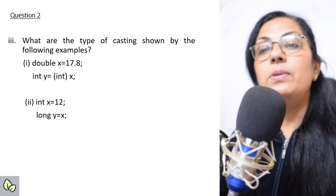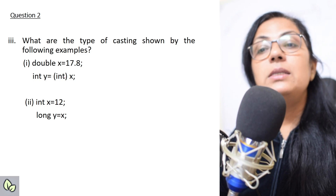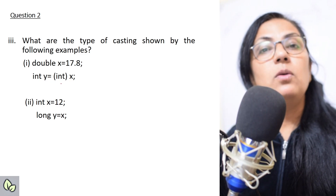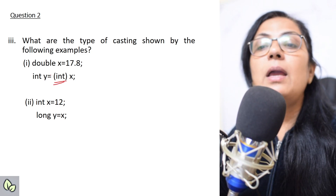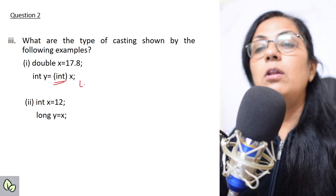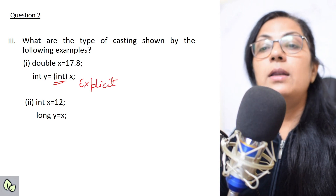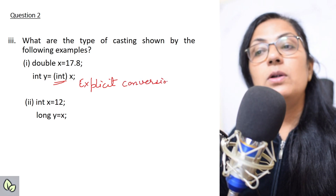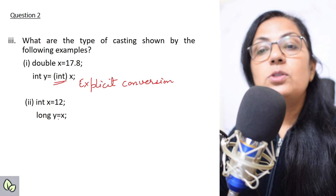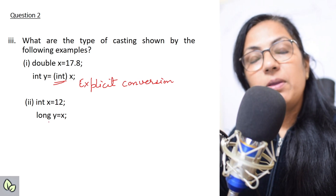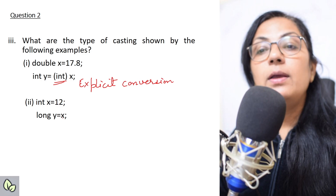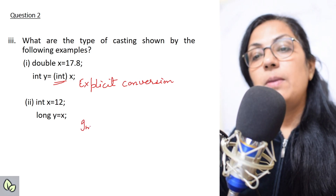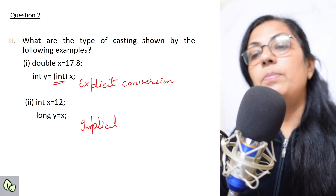What type of casting is shown by the following examples? double x = 17.8; int y = (int)x. If you write int y = x without the cast it gives an error because double cannot be automatically converted to int. When a data type is written within brackets like (int), this is always explicit conversion — we are forcefully converting double to int. The second example: int x = 12; long y = x. Here int is automatically stored into long — this is implicit conversion.